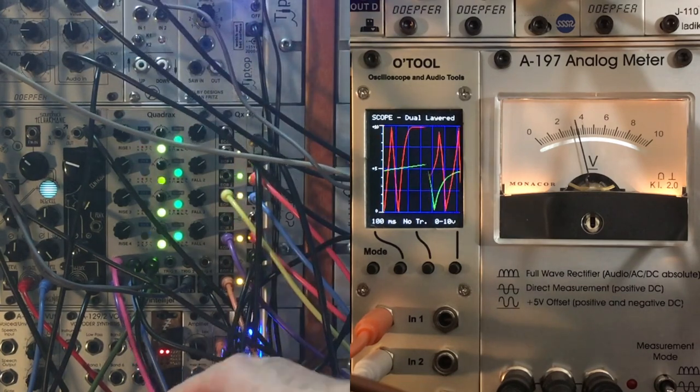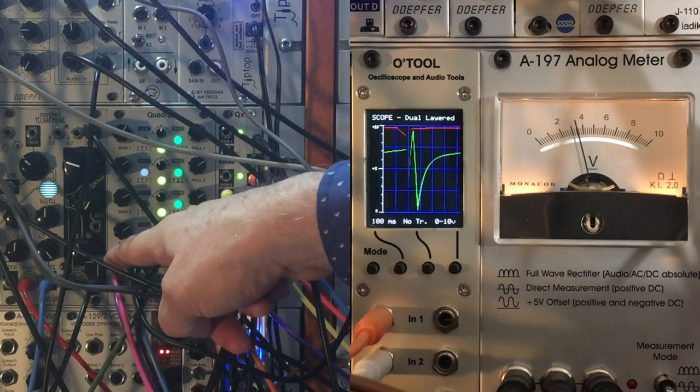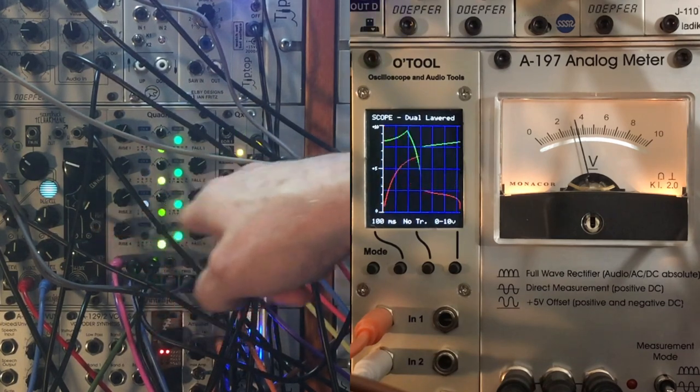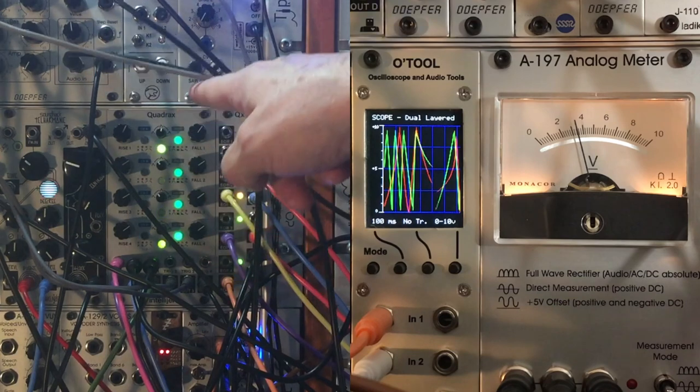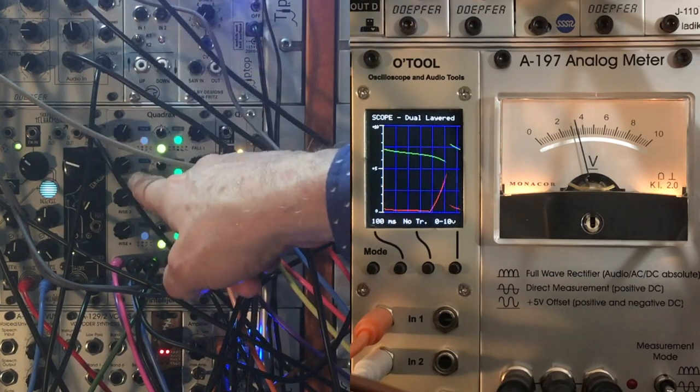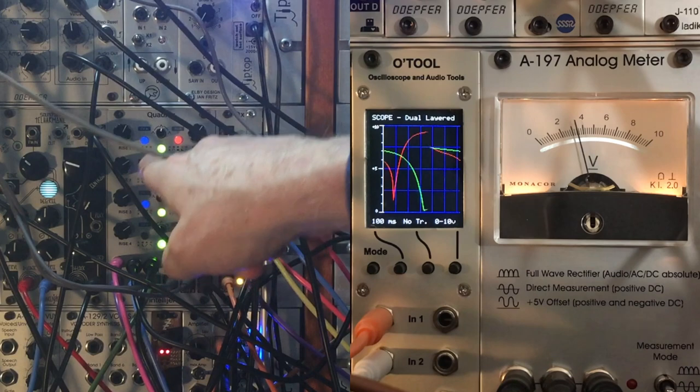So like we saw last time, this pink lead comes into CVA. CVA is controlling the rise and the fall on our melody. But let's take a look and see what it is doing with these teleharmonic parts.